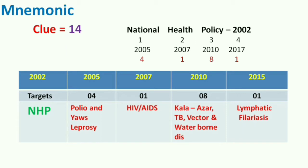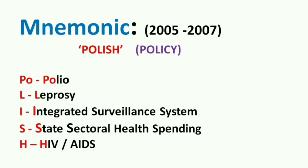Regarding communicable diseases: 2005 covers polio and leprosy; 2007 covers HIV/AIDS; 2010 covers Kala-azar, TB, malaria, vector and waterborne diseases; and 2015 covers lymphatic filariasis. The mnemonic made for 2005 to 2007 targets is POLISH — like 'National Health Policy, you can remember it is POLISH.'